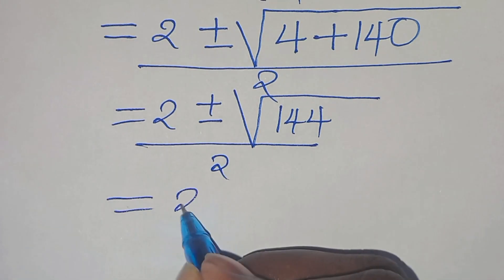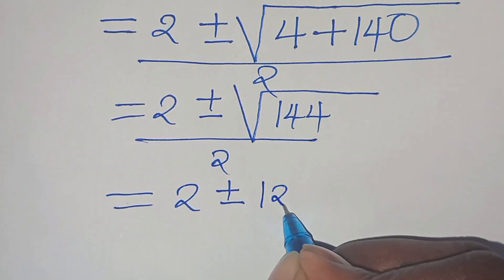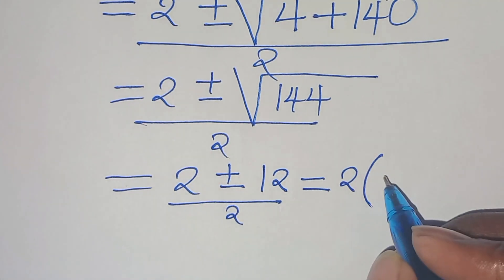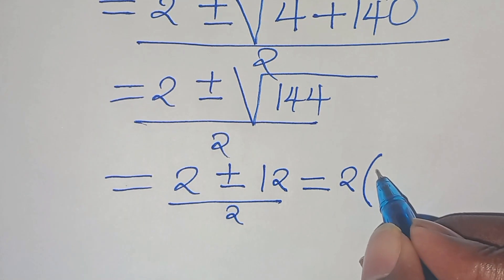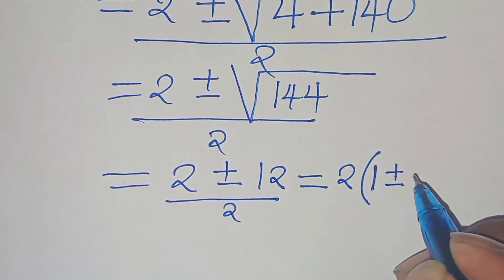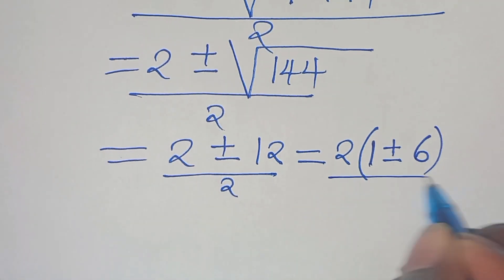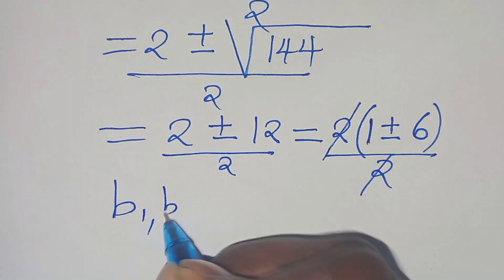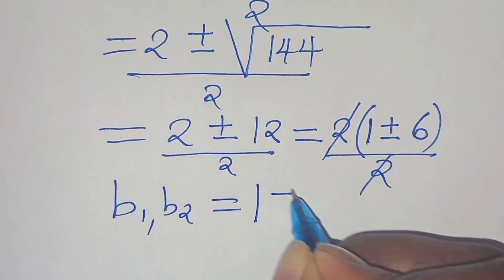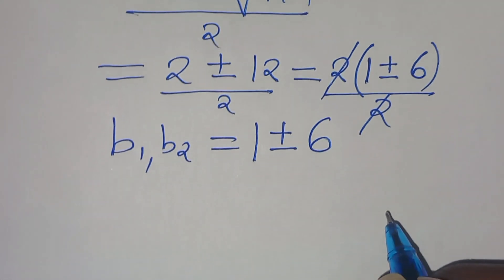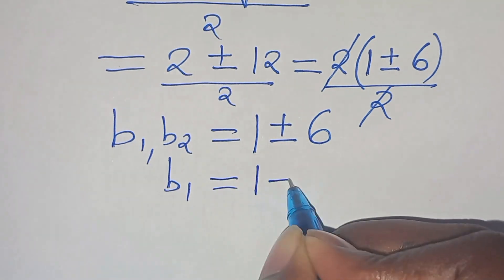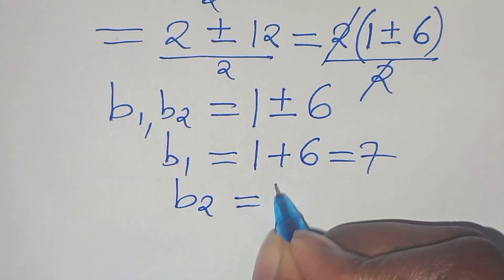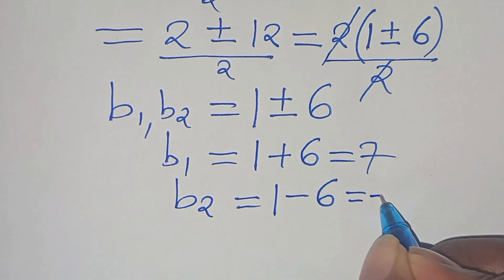Continuing, divided by 2: we have 2 plus or minus the square root of 4 plus 140, which is 144, divided by 2. The square root of 144 is 12, so we have 2 plus or minus 12, over 2. Since 2 is common in the numerator, factoring out 2 gives 1 plus or minus 6, and simplifying the 2s, b1 comma b2 equals 1 plus or minus 6. Therefore b1 equals 1 plus 6 equals 7, and b2 equals 1 minus 6 equals minus 5.